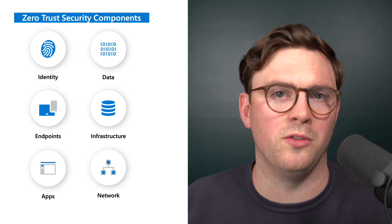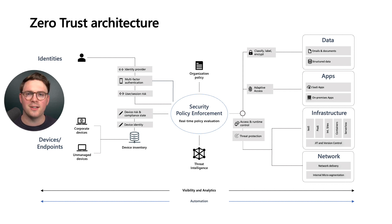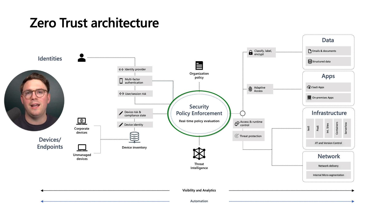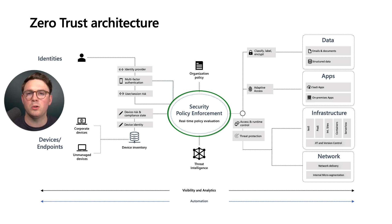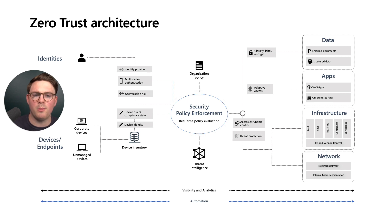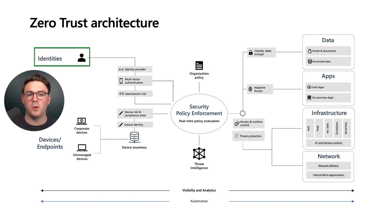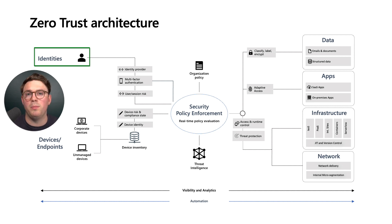Now let's look at that in a more architectural view. When we look at the Microsoft Zero Trust architecture, we're bringing together all six components. At the heart of this is a policy engine that makes automated and dynamic access decisions based on trust. We have our organization policies and a real-time policy evaluation engine in the middle. On the left-hand side, we have our inputs — starting with identity, which controls things like multi-factor authentication and risk signals. For example, if I'm in London, I shouldn't be in Los Angeles within one minute — that's impossible travel, and we'd challenge with MFA.